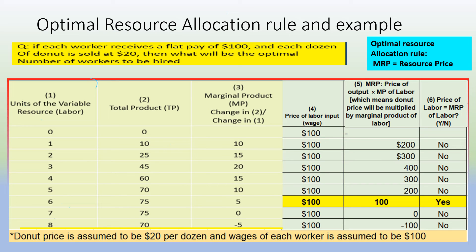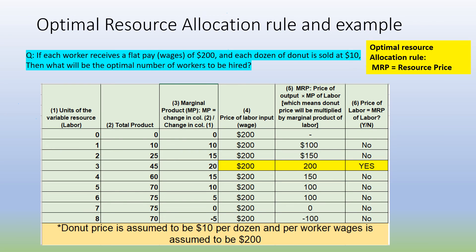Stopping at five workers is also not optimal because the fifth worker's marginal product is 10 dozens, meaning the company could earn $200 from that person's work. If the company stops at five workers, it would miss out on additional revenue opportunity, since the sixth worker can generate enough revenue to cover their own cost. The company is better off hiring up to the point where MRP equals the cost in the form of wages and salaries — that is the optimal resource allocation rule.